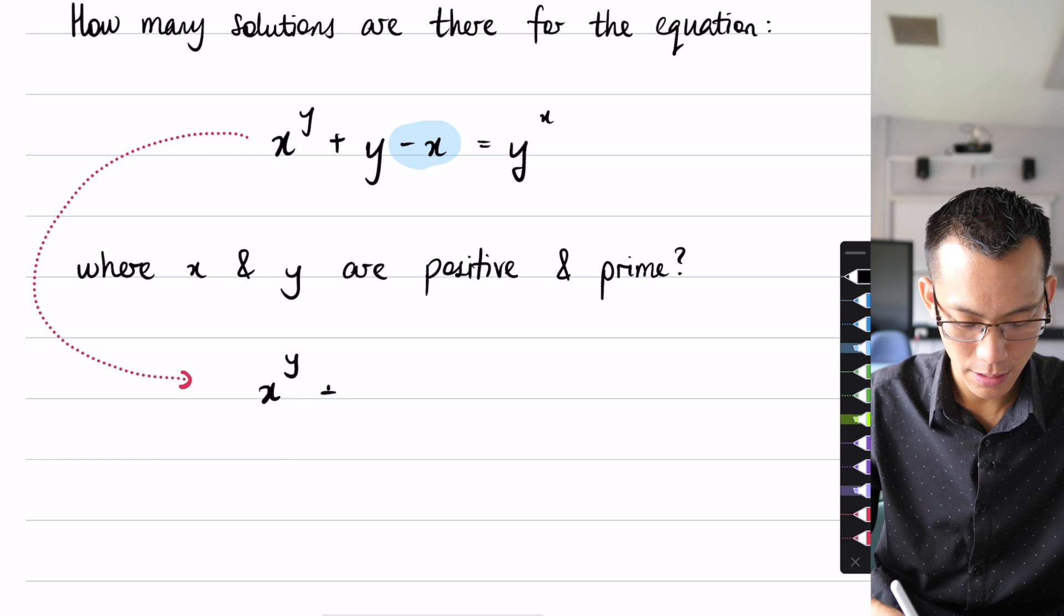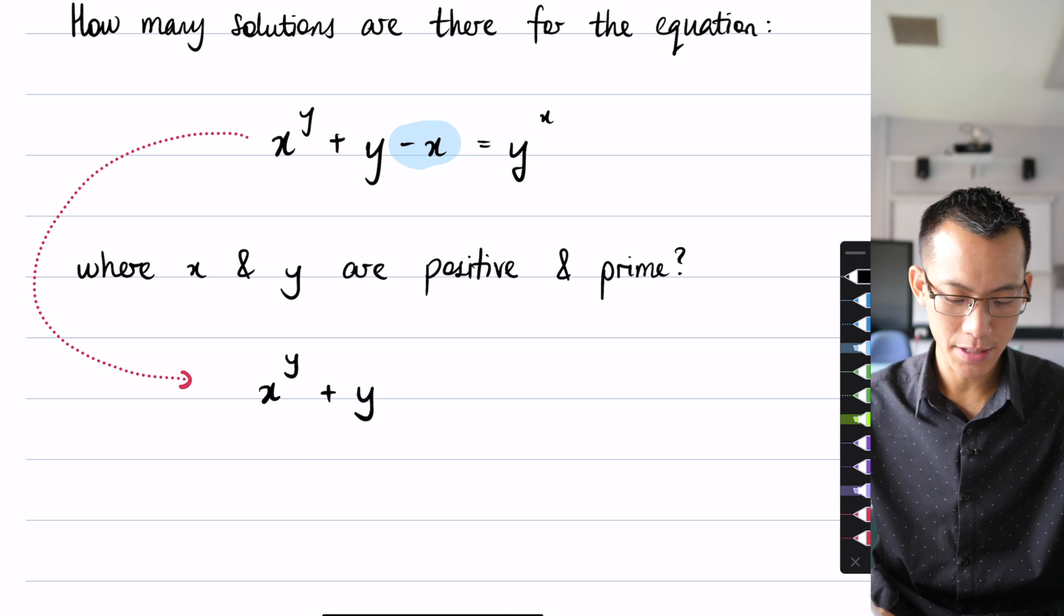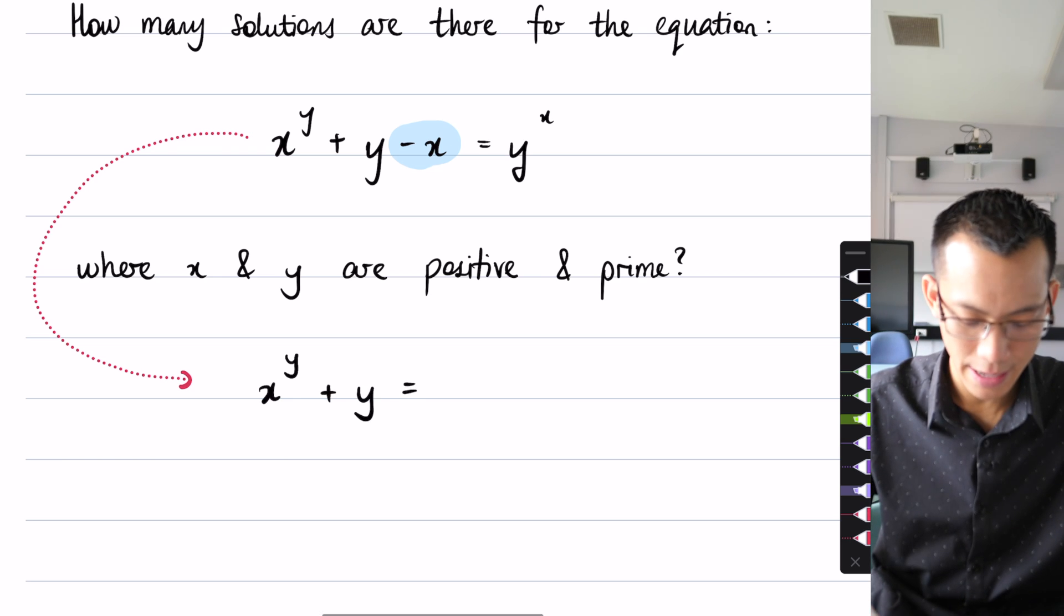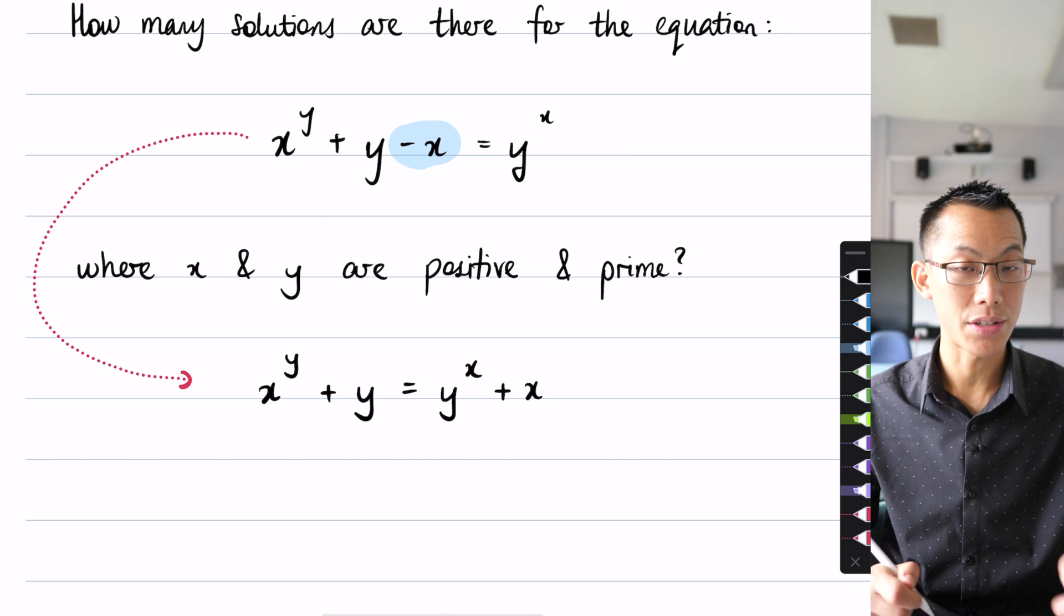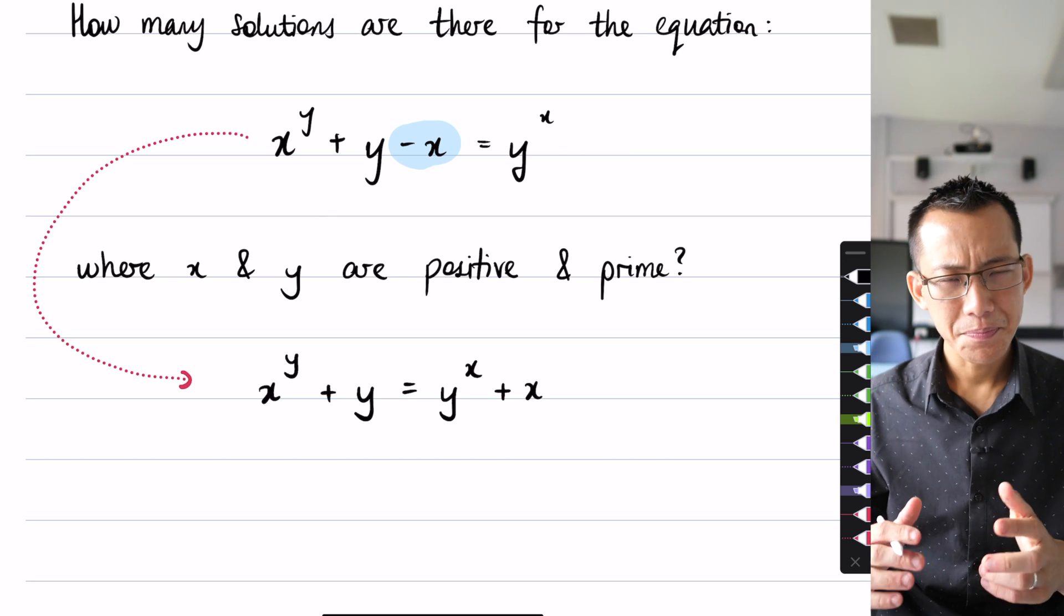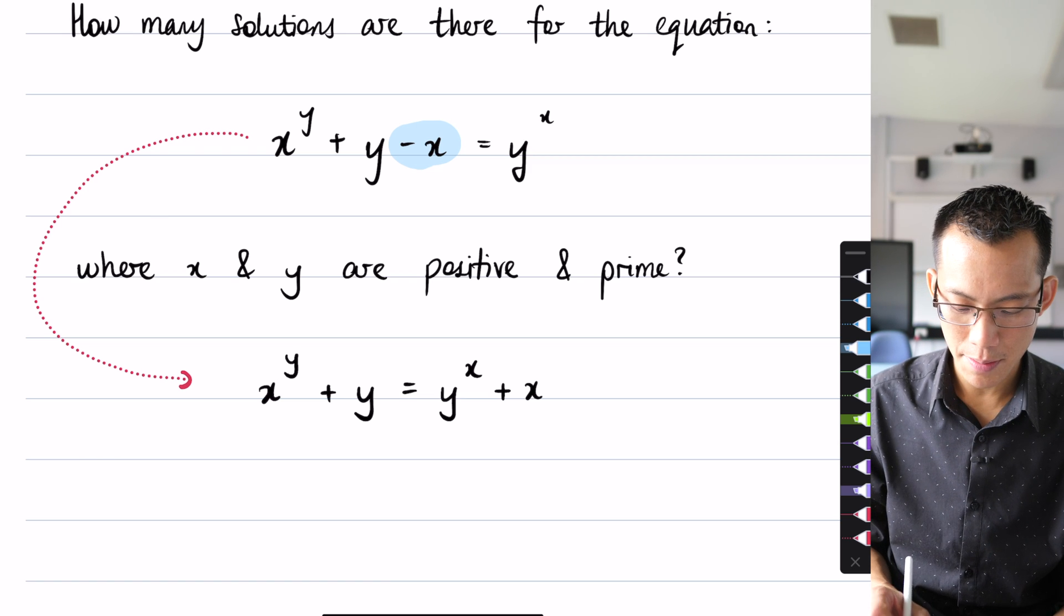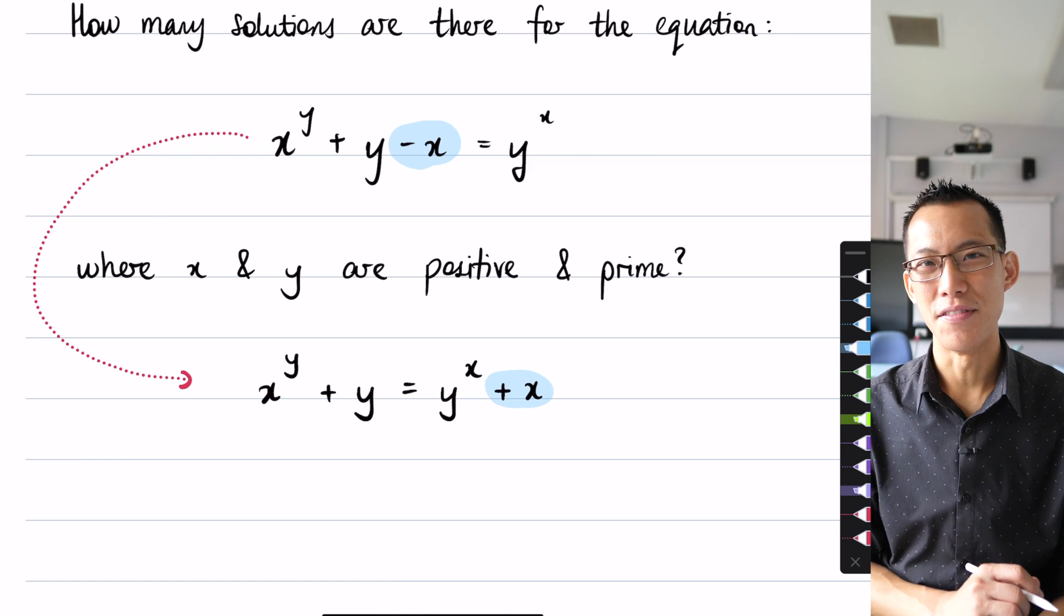I'm gonna write x to the y plus y remaining on the left-hand side, and then the right-hand side I get y to the x plus x which I just added to both sides.